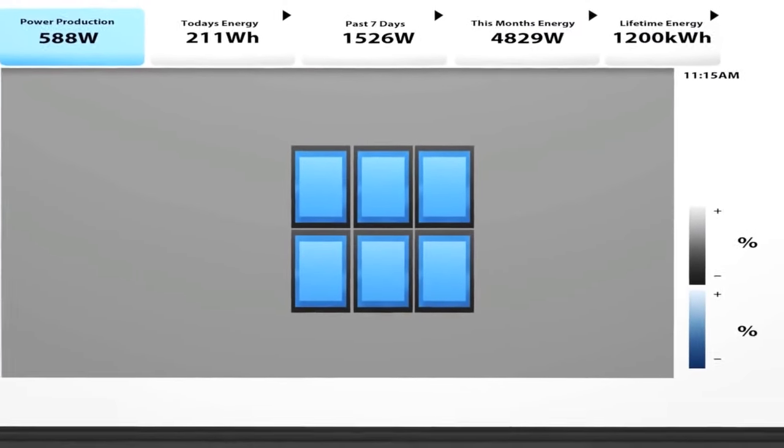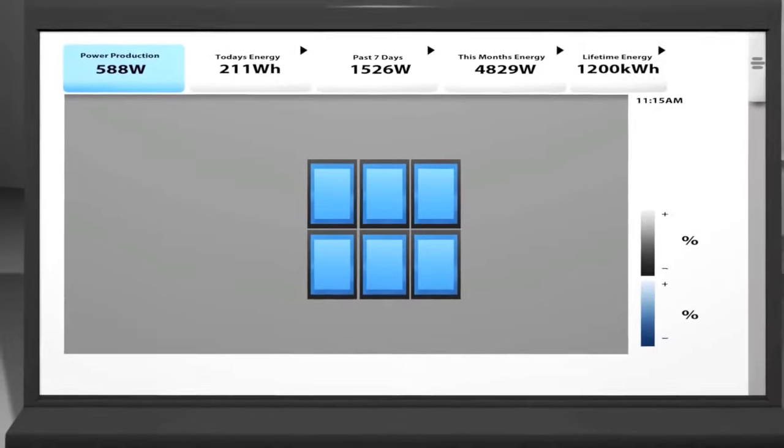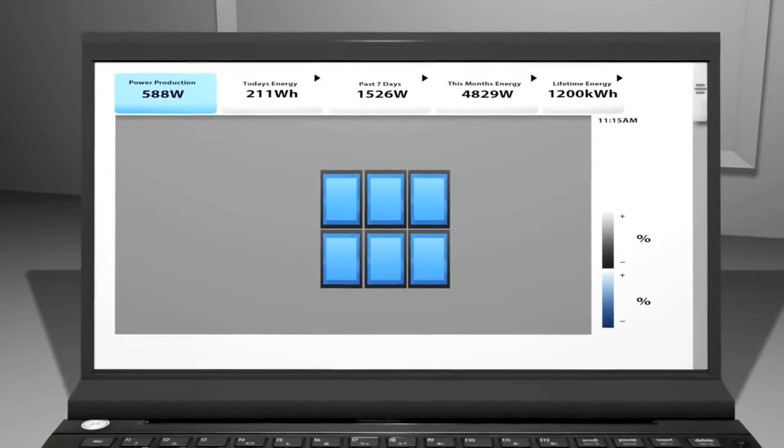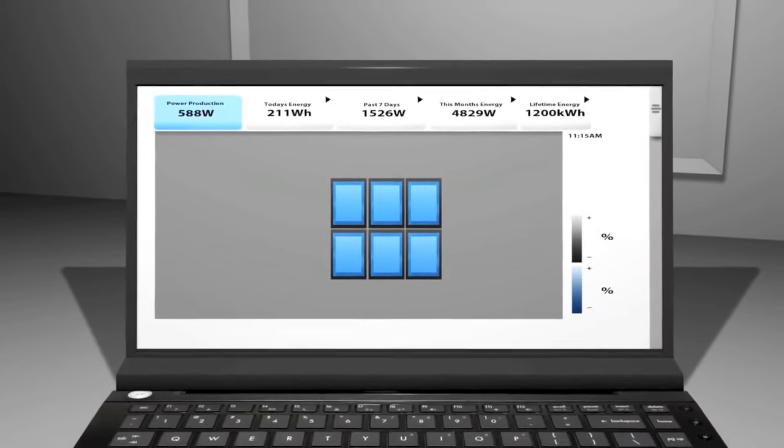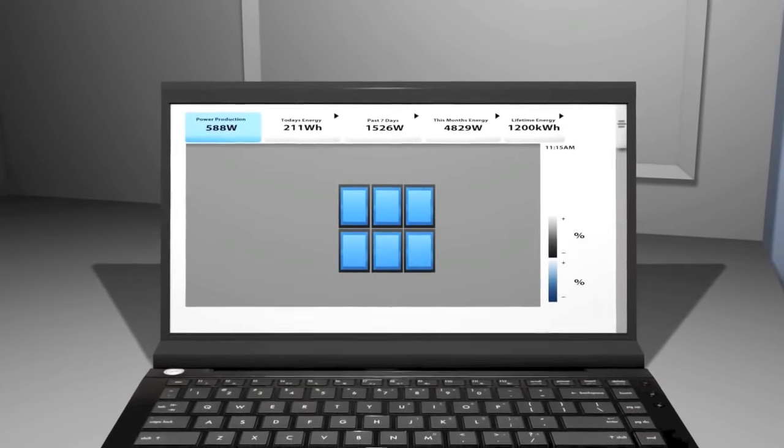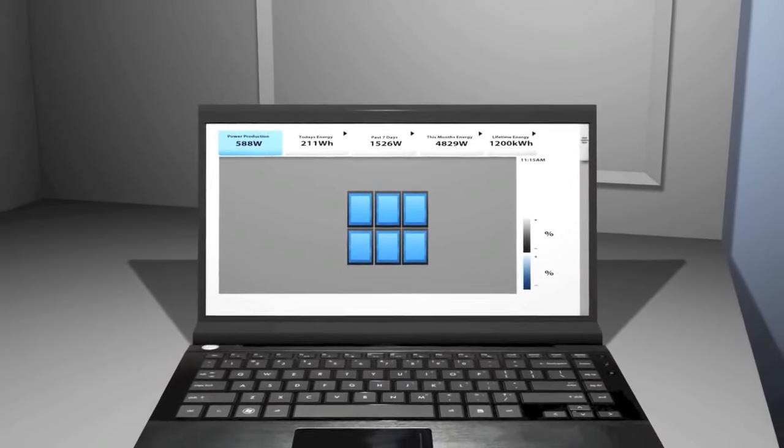These tracking systems often have live display systems or online monitors, so you can track how much of your home's electricity needs are being met by your system's production, and how well your system is performing at any point in time.